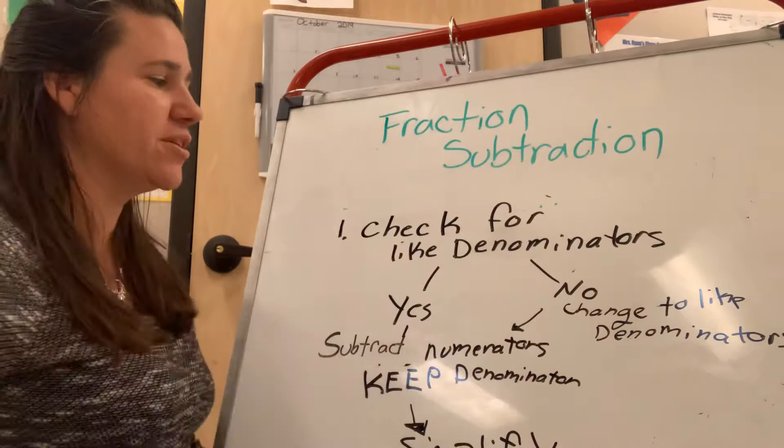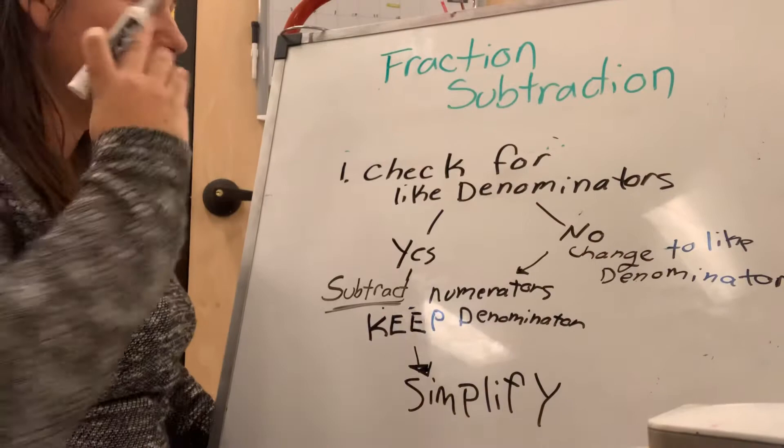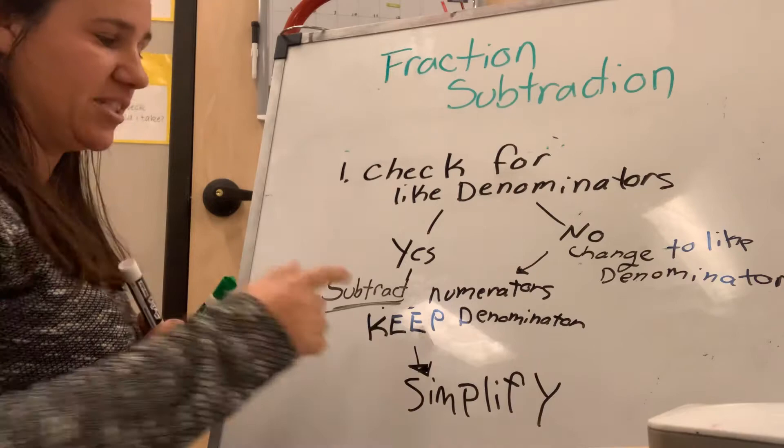The first thing you do is check for like denominators. If they are like denominators, then you can subtract the numerators and keep the denominator. Then you'll simplify. If the denominators are not like denominators, then you need to change the denominator into a like denominator and then subtract straight across and you will then simplify for your answer.